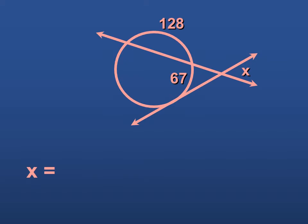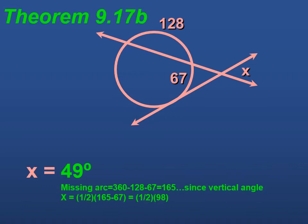It's congruent to this angle. And this angle is going to be equal to this arc minus 67. So here's the work to figure out what X is. We know that this missing arc is going to be 360 minus 128 minus 67, and that gives us 165. So now we know that this arc is 165, and now we can go ahead and use our theorem, which says that this angle will be half of 165 minus 67, or half of 98, which means that this angle will be 49. And since this 49 is vertical to X, X will also be 49.